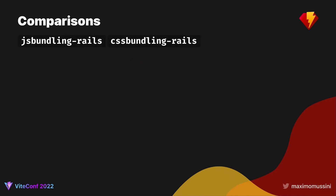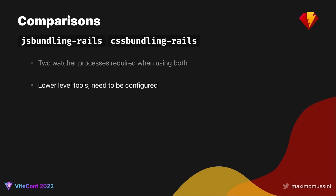JS Bundling and CSS Bundling are two newer solutions to bundle JS and CSS in Rails, and they work by watching files and rebuilding on changes, requiring two separate processes if you're using both. Compared to Webpacker and ViteRuby, they are lower-level tools requiring manual configuration to get started. The main downside is that they don't support HMR, so even when using one of the faster options like esbuild, you will still need to do a full-page reload to see changes.